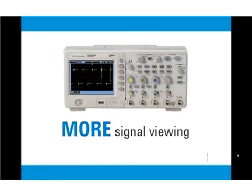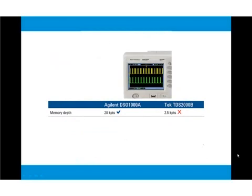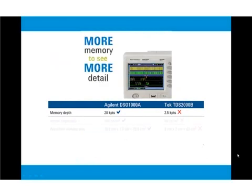Up to 8 times more memory than Tektronix TDS-2000B scopes, Agilent's 20 kilopoints of memory per channel means you see more time and more detail on your signal.